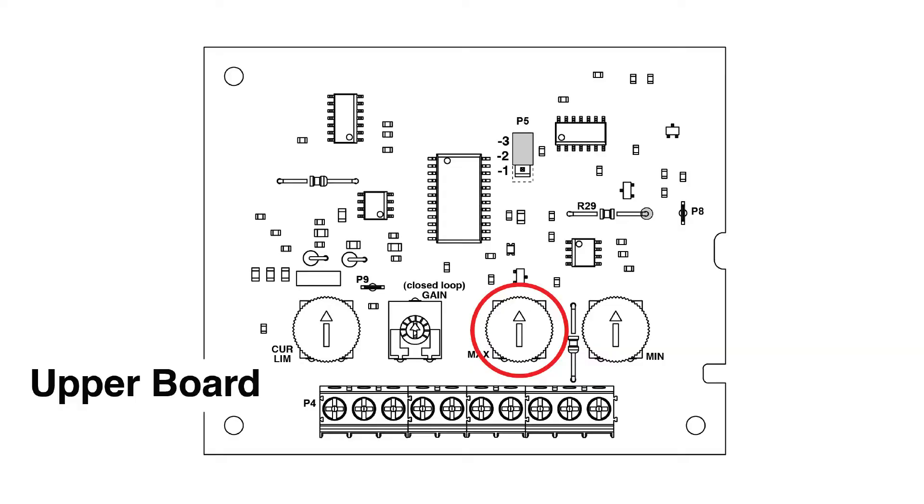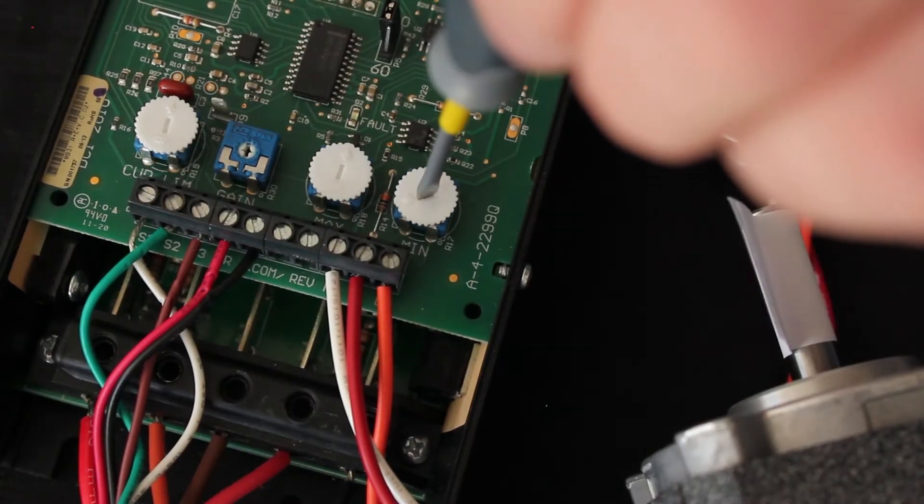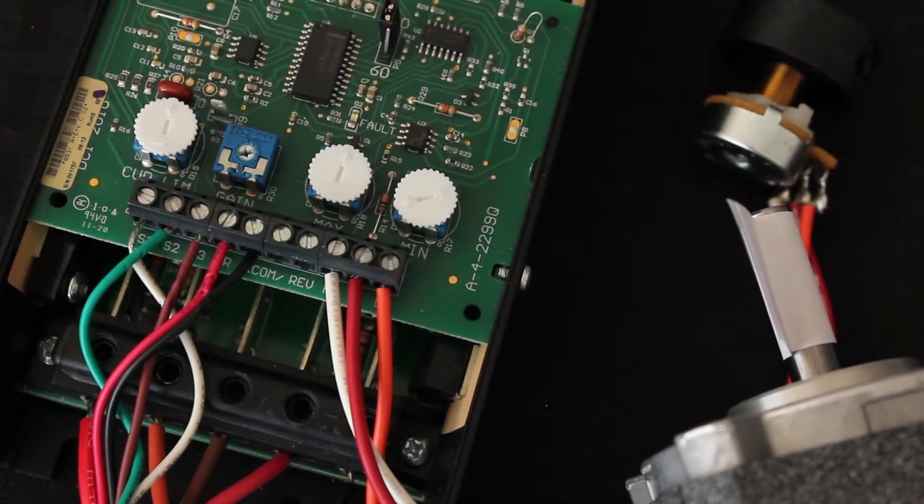Set the maximum speed trim pot to the position shown in this figure. Set the minimum speed and closed-loop gain trim pots to their fully counterclockwise positions.